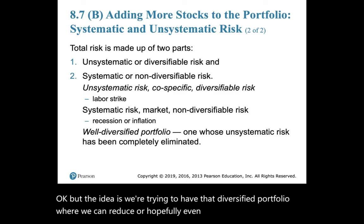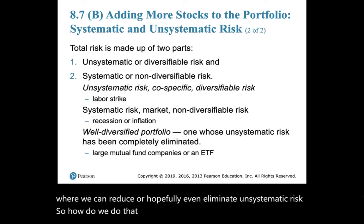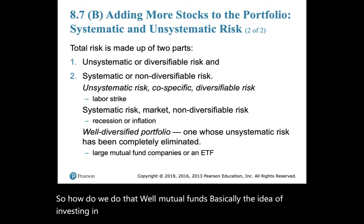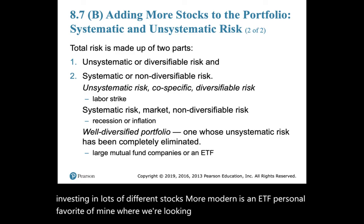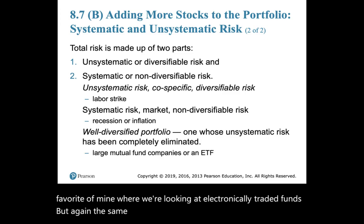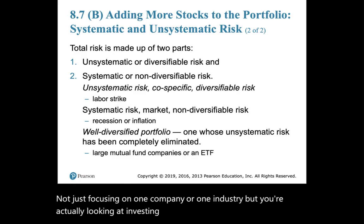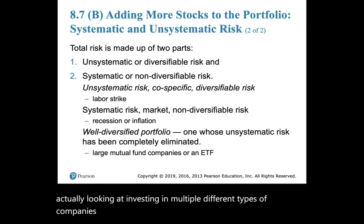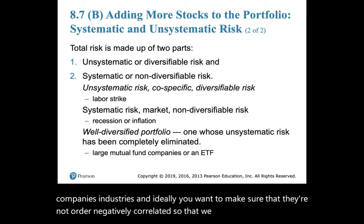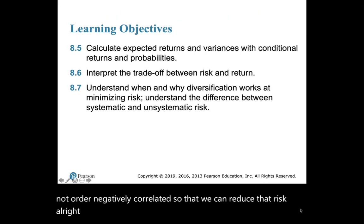The idea is to have a diversified portfolio where we can reduce or even eliminate unsystematic risk. Strategies include mutual funds, or more modern options like ETFs (exchange-traded funds). Think about an index fund where you're not focusing on one company or industry but investing across multiple types of companies and industries — ideally ones that are negatively correlated — to reduce risk.